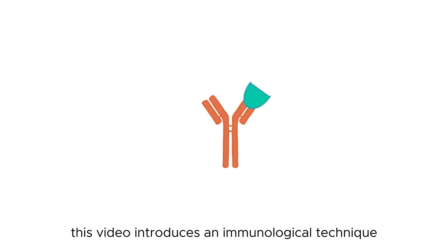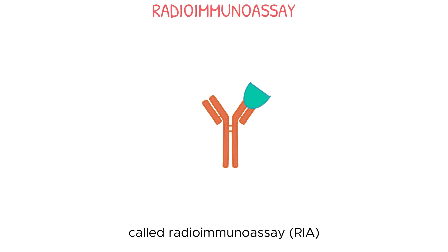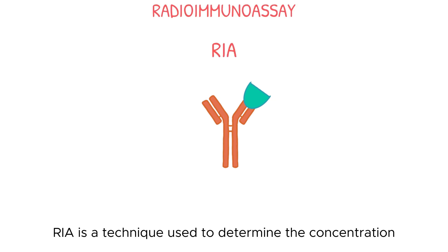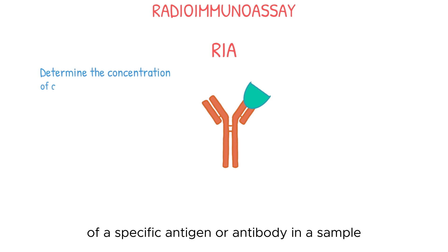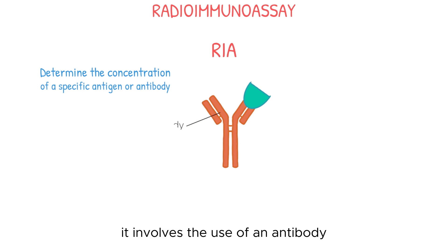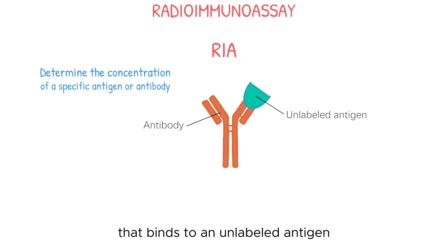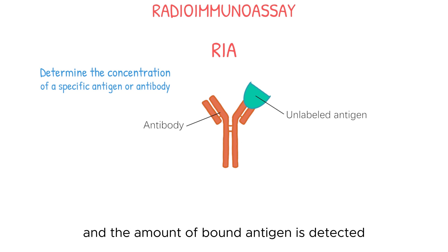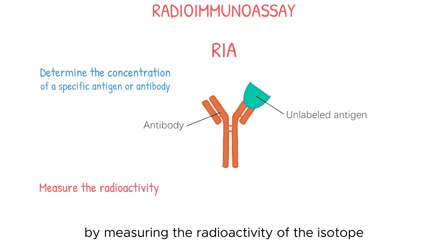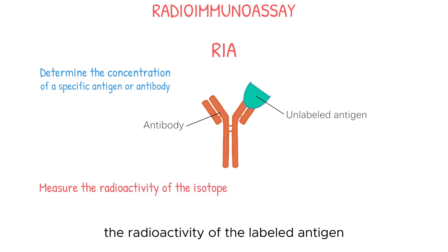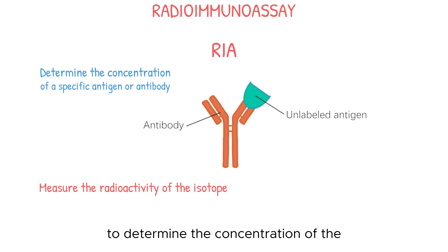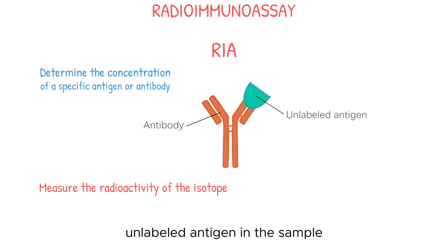Hello, everyone. This video introduces an immunological technique called radioimmunoassay, or RIA. RIA is a technique used to determine the concentration of a specific antigen or antibody in a sample. It involves the use of an antibody labeled with a radioactive isotope that binds to an unlabeled antigen, and the amount of bound antigen is detected by measuring the radioactivity of the isotope. The radioactivity of the labeled antigen can be detected and quantified to determine the concentration of the unlabeled antigen in the sample.